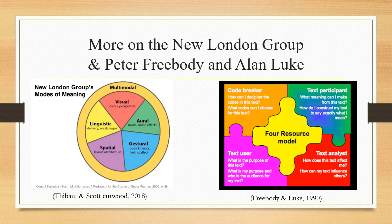As a text user, the reader uses information provided in the text. As a code breaker, the reader can understand the meaning of the text and has inferential understanding as well. As a text analyst, the reader looks at how the text affects them directly, also how it would affect other people reading it, and why. As a text participant, the reader looks at what meaning they can gather from the text — is it informational, or is there a clear moral to the story?